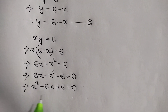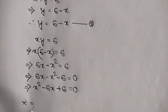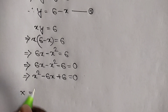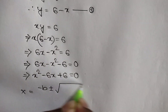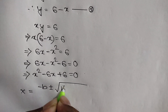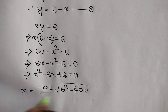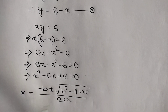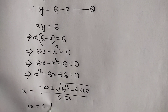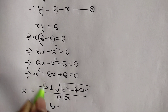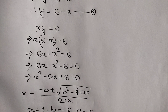Now here we can apply the quadratic formula. x is equal to negative b plus or minus square root of b squared minus 4ac, over 2a. Here, a is equal to 1, b is equal to negative 6, and c is equal to positive 6.